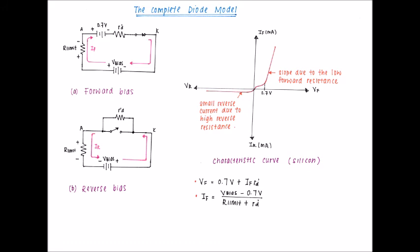The complete diode model consists of barrier potential, dynamic resistance, and internal reverse resistance. The forward voltage includes the barrier potential plus the voltage drop across the dynamic resistance. For forward bias, it acts as a closed switch in series with the barrier potential and a small dynamic resistance. For reverse bias, it acts as an open switch in parallel with a large internal reverse resistance.